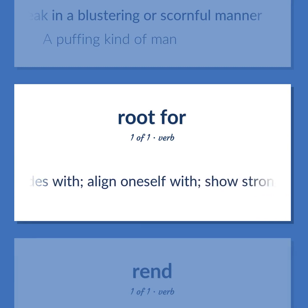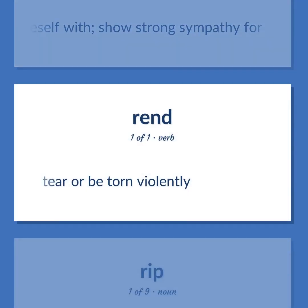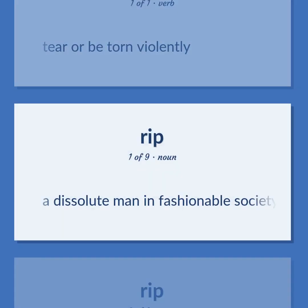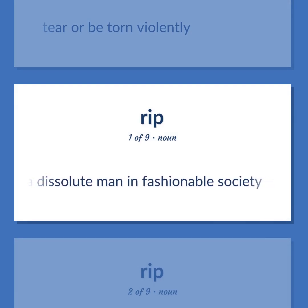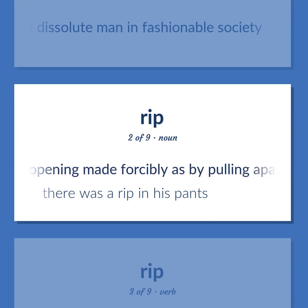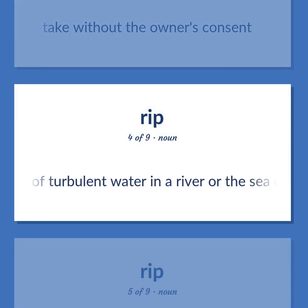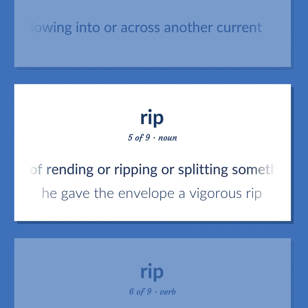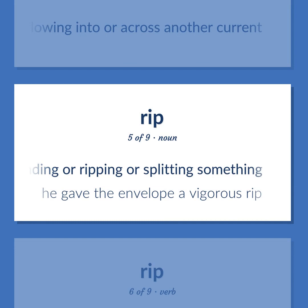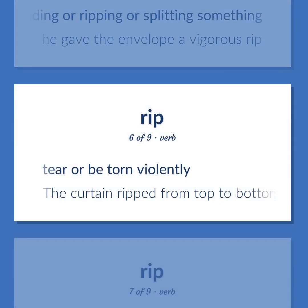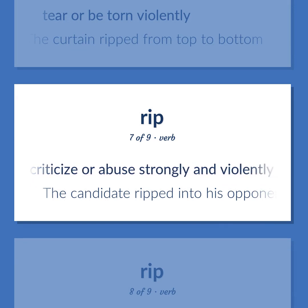Rip: to take sides with, align oneself with, show strong sympathy for. Also, to tear or be torn violently. Also, a dissolute man in fashionable society. Also, an opening made forcibly, as by pulling apart — 'There was a rip in his pants.' Also, to take without the owner's consent. Also, a stretch of turbulent water in a river or the sea caused by one current flowing into or across another. Also, the act of rending or ripping or splitting something — 'He gave the envelope a vigorous rip.' Also, to criticize or abuse strongly and violently — 'The candidate ripped into his opponent mercilessly.'